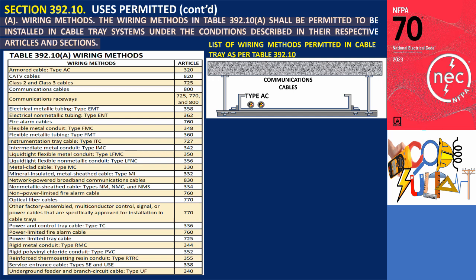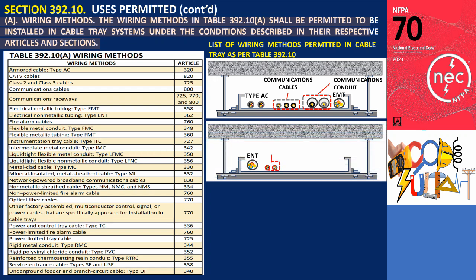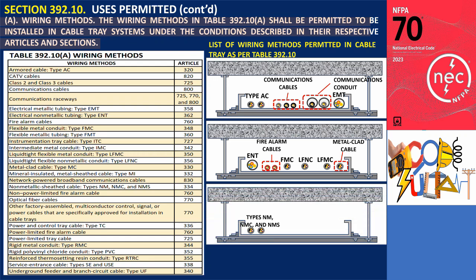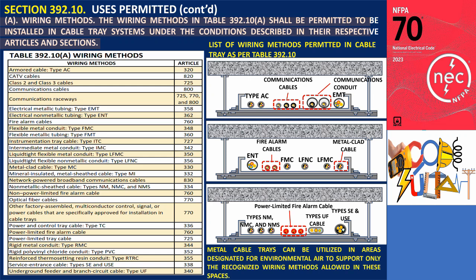The table includes: Armored Cable Type AC, Communications Cables, Electrical Metallic Tubing Type EMT, Fire Alarm Cables, Flexible Metallic Conduit Type FMC, Liquidtight Flexible Non-Metallic Conduit Type LFNC, Metal Clad Cable, Non-Metallic Sheath Cable Types NM, NMC, and NMS, Power Limited Fire Alarm Cable, Type MC Cable, Type UF Cable, and Service Entrance Cable Types SE and USE. Metal cable trays can be utilized in areas designated for environmental air plenums to support only the recognized wiring methods allowed in those spaces. It is not the metal cable trays that impose limitations, but rather the specific cable or wiring method being used.